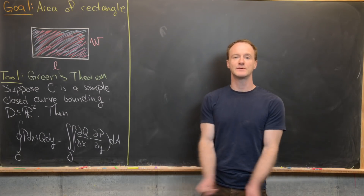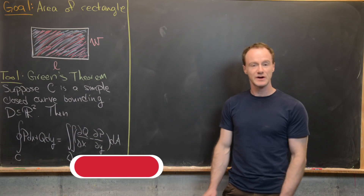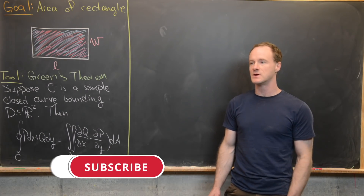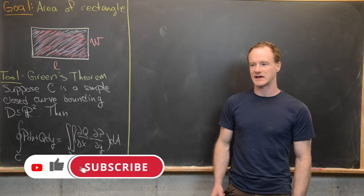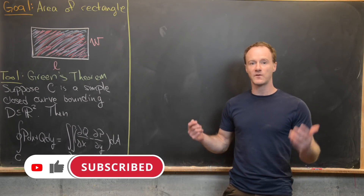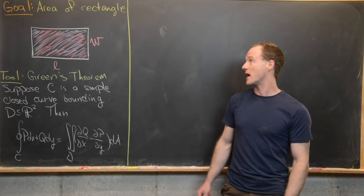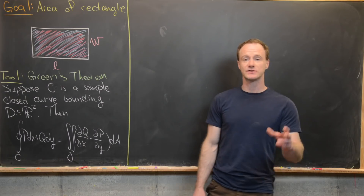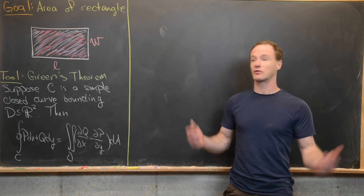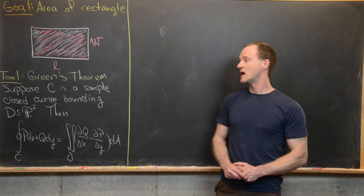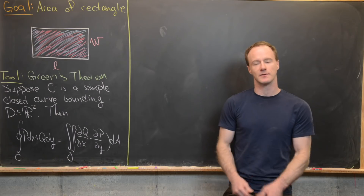Welcome to another episode of Overkill, where we solve a pretty simple problem using outrageously difficult techniques, hopefully to highlight some deeper mathematics. Today we want to find the area of a rectangle, and we're going to do that using Green's theorem.